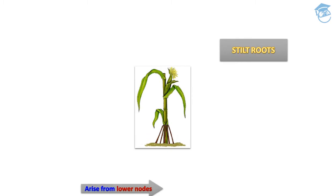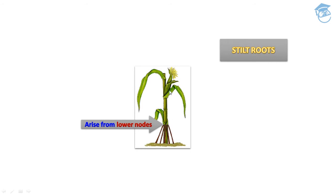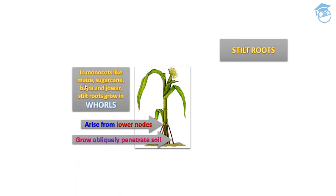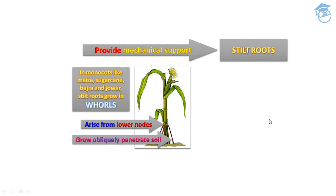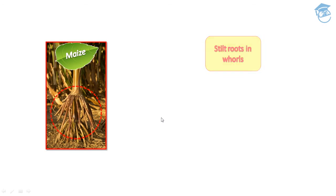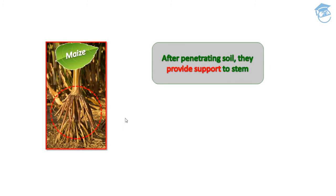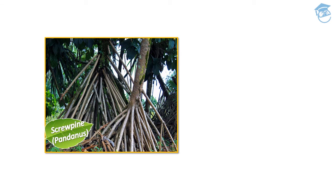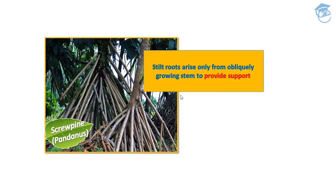Now comes stilt roots. They arise from the lower nodes and grow obliquely to penetrate the soil. In monocots like maize, sugarcane, jowar, stilt roots grow in a whorl-like structure and provide mechanical support. After penetrating the soil, they provide support to the stem. It is also seen in pandanus, whose common name is screw pine. Stilt roots arise only obliquely from the growing stem to provide support.